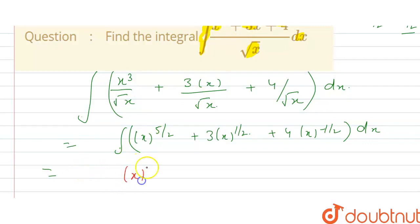So, it becomes x power 5 by 2 plus 1, plus 3, x power 1 by 2 plus 1, plus 4, x power minus 1 by 2 plus 1, divided by minus 1 by 2 plus 1, divided by 1 by 2 plus 1, divided by 5 by 2 plus 1. So this is the integration.